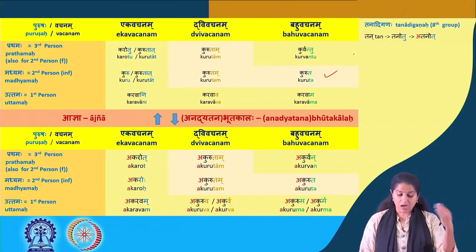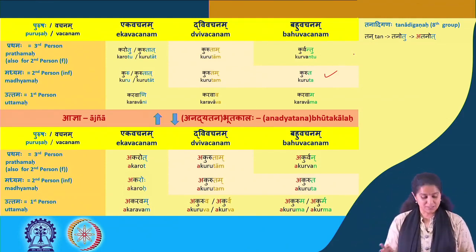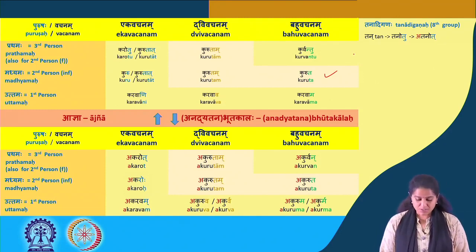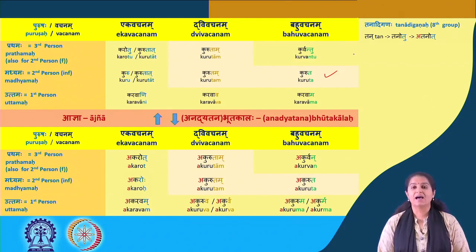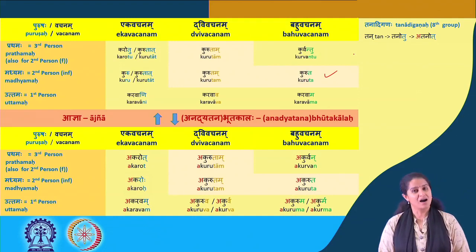The Anadyatana Bhutakala forms: Akaroth, Akurutam, Akurvan, Akaroho, Akurutam, Akuruta, Akaravam, Akuruva or Akurva, and Akuruma or Akurma. To make a sentence — 'he took his food yesterday': Saha Tasya Bhojanam Akaroth. Kada Akaroth? Hyaha. So: Saha Tasya Bhojanam Hyaha Akaroth. Or if I say 'he did his homework yesterday': Tasya Grihakaryam Akaroth — uttamam.